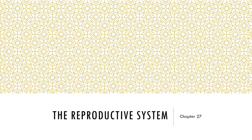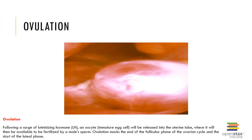In chapter 27 we will examine the reproductive system. Ovulation is shown here. Ovulation follows a surge of luteinizing hormone, and an oocyte — an immature egg cell — is released into the uterine tube where it will be available to be fertilized by a male sperm. Ovulation marks the end of the follicular phase of the ovarian cycle and the start of the luteal phase.